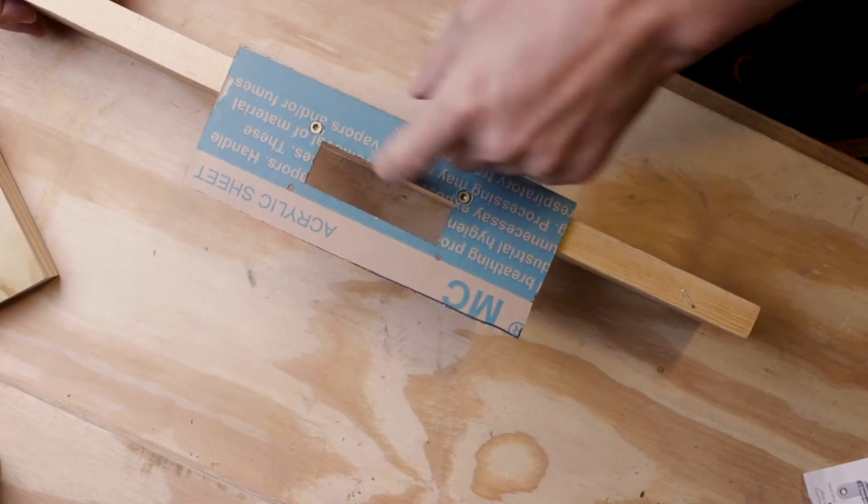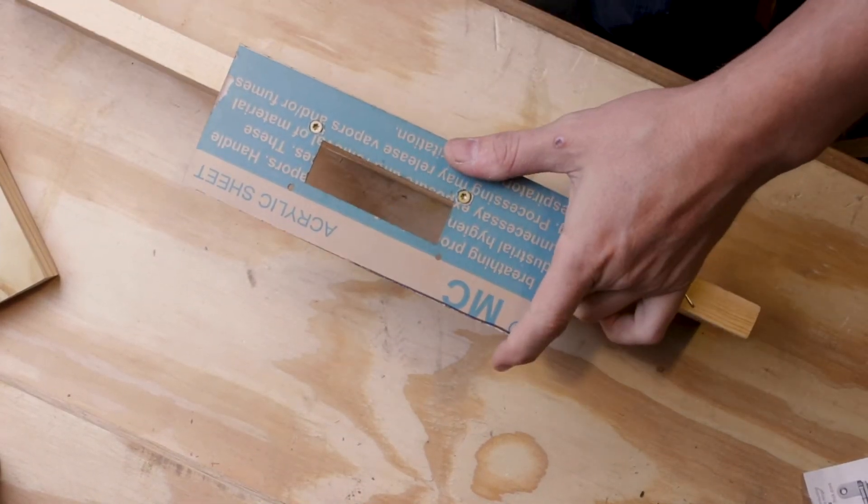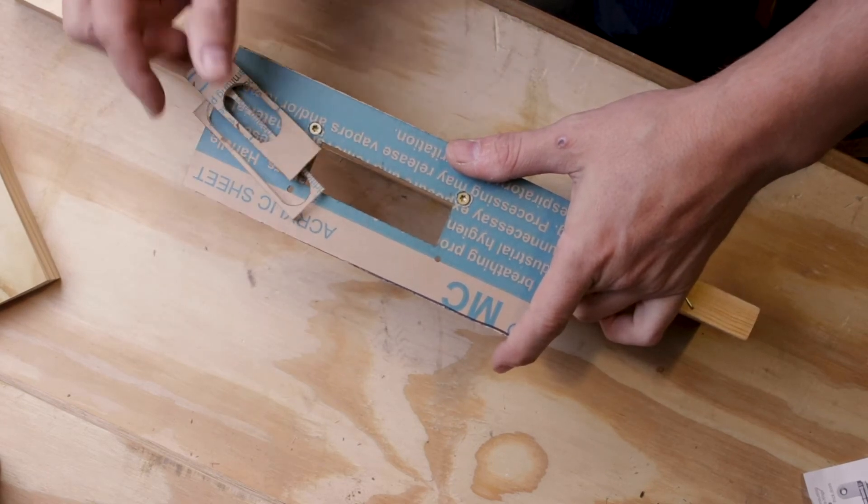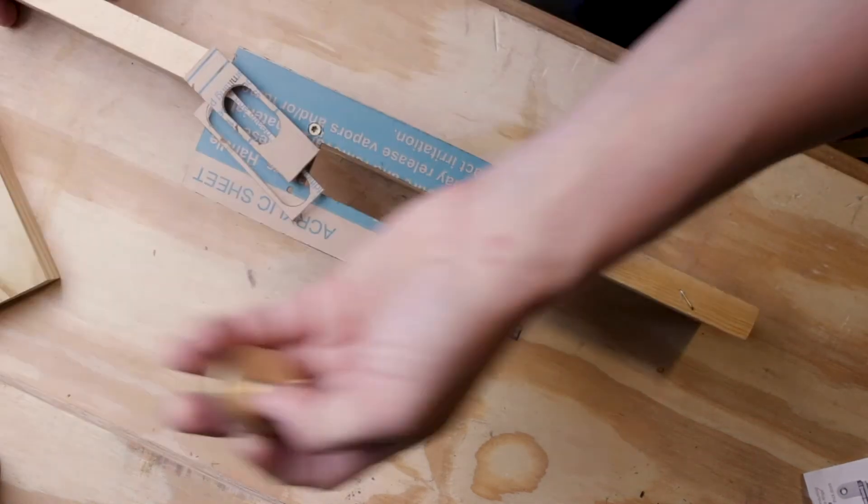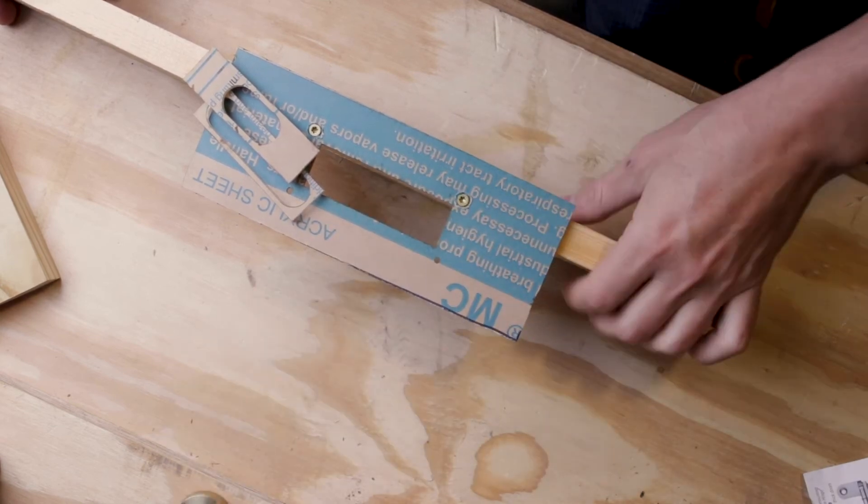So this is it, screwed on. It's flush over here. I got the other two pieces here. I'm going to mount it in the router and then we'll give it a test.